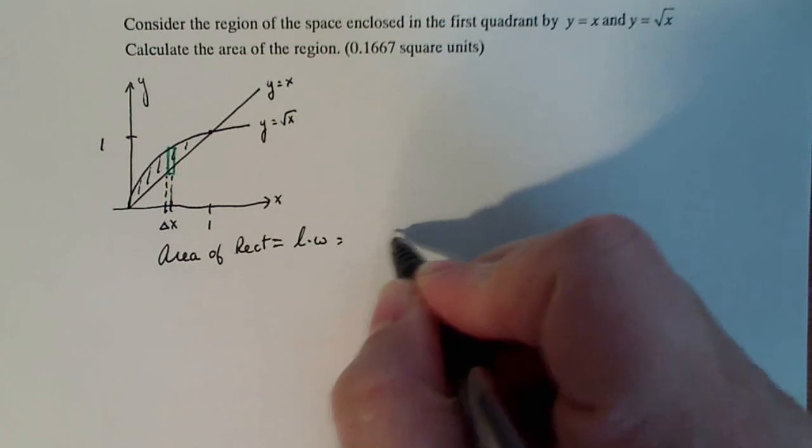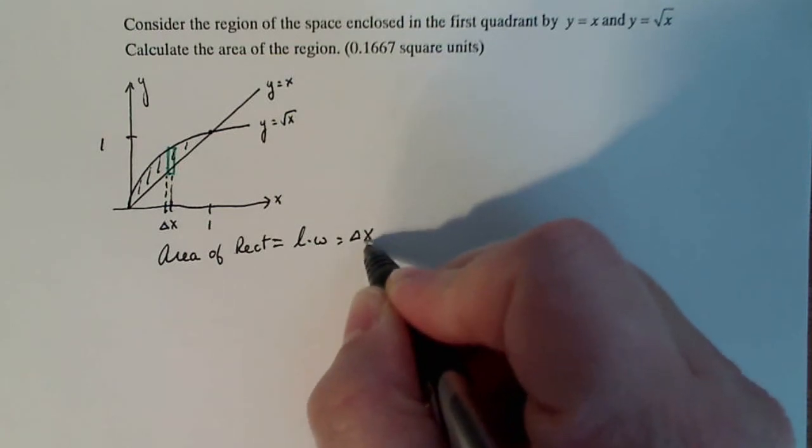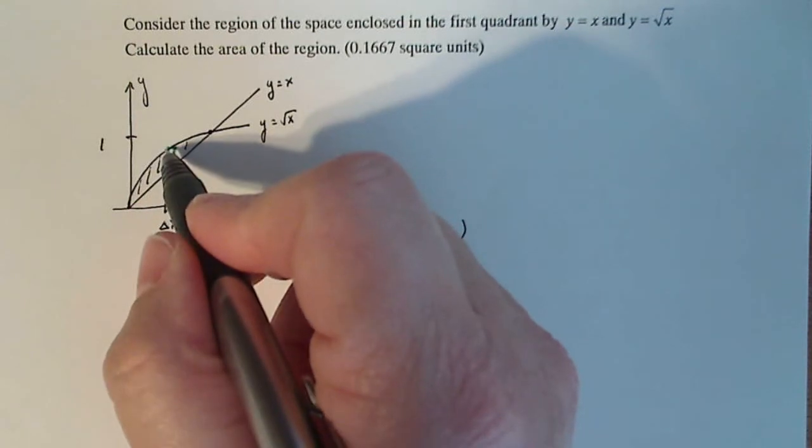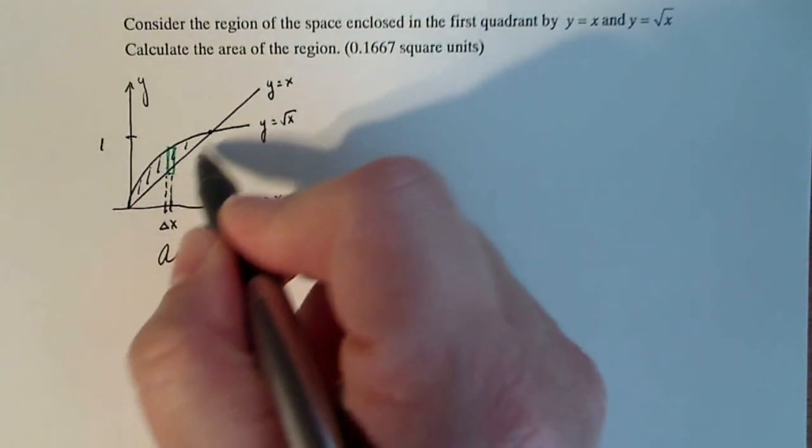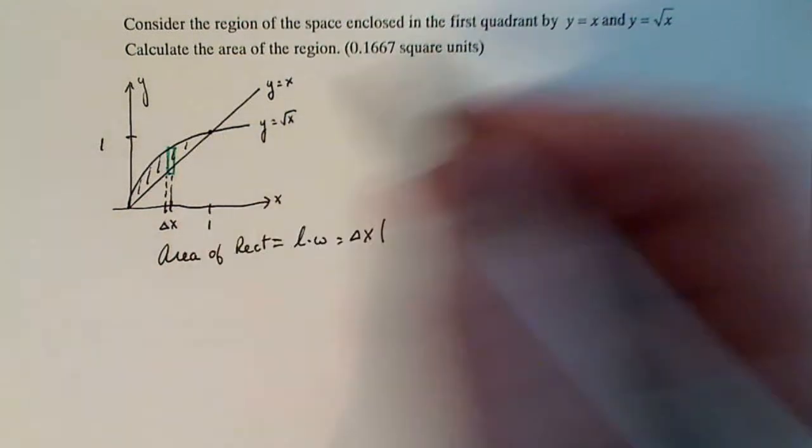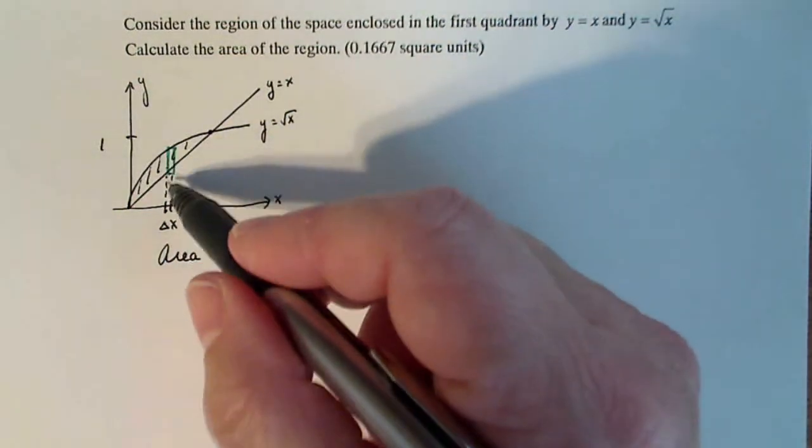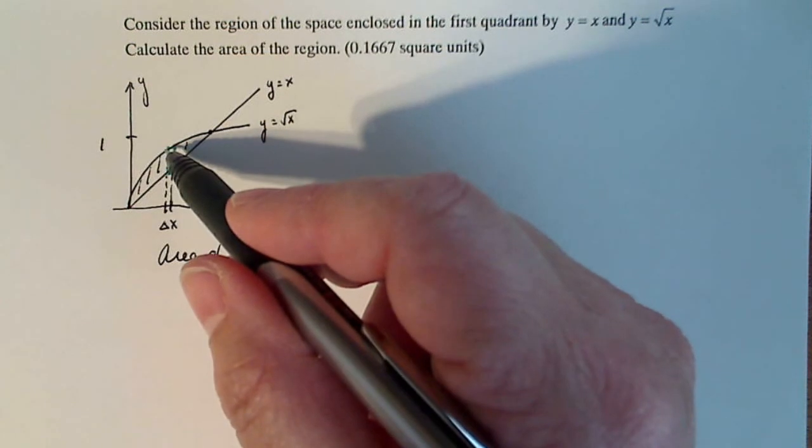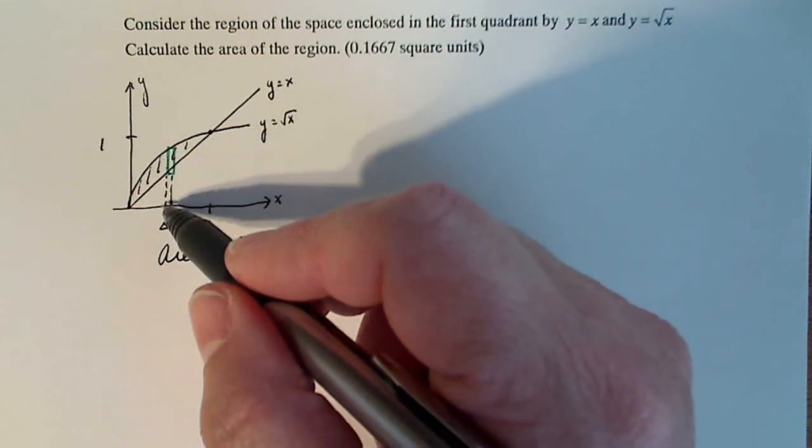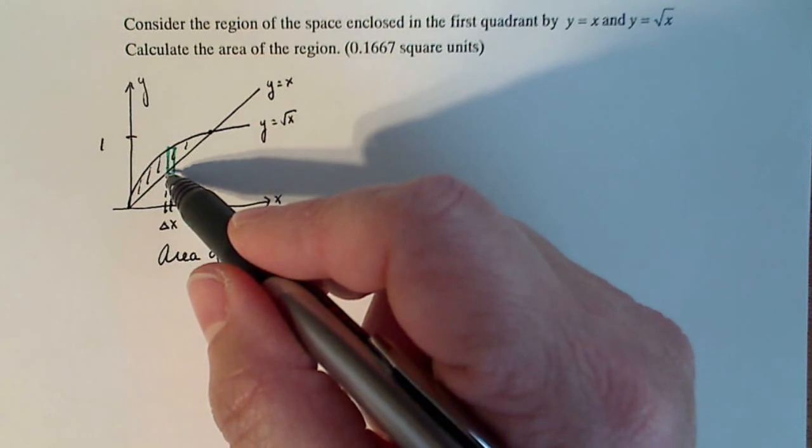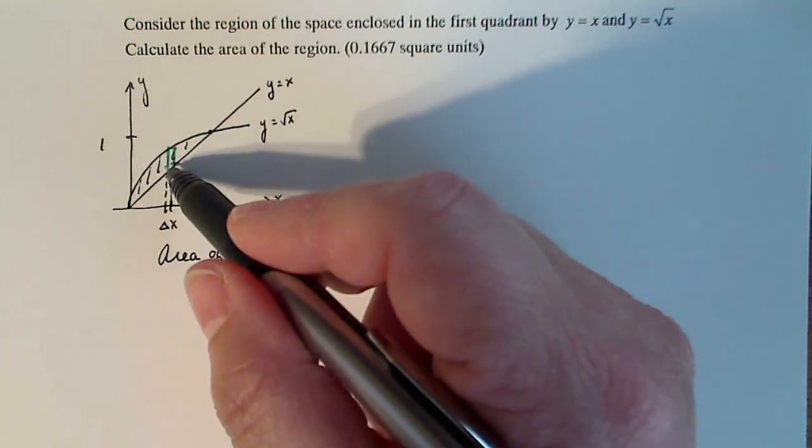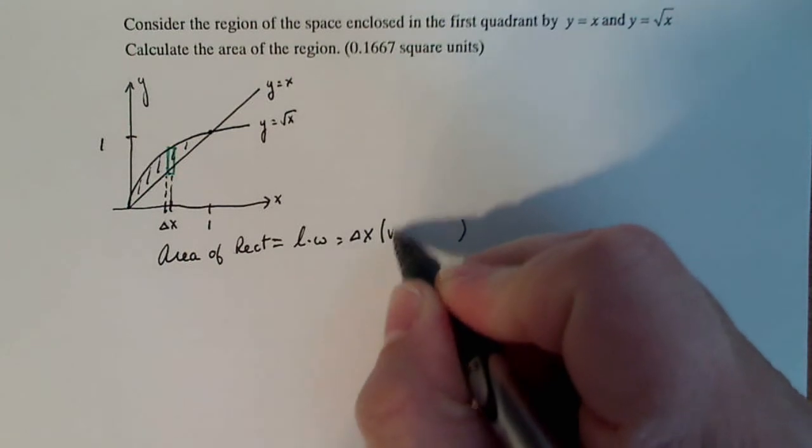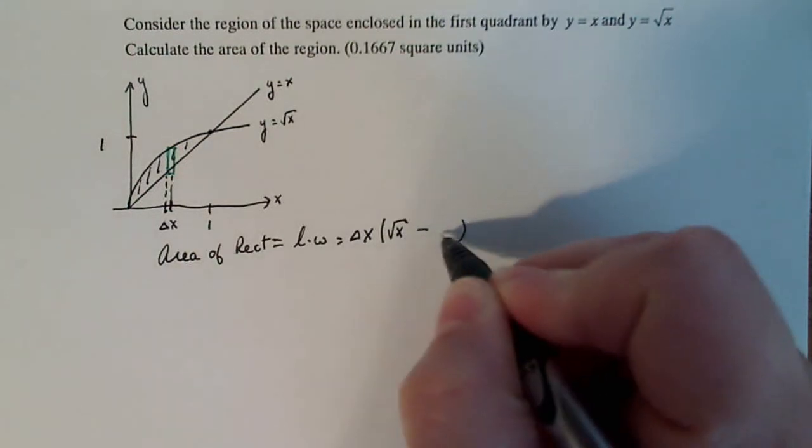So I know my width is delta x. Now I just have to come up with the length of my rectangle, which is this distance here between y equals square root of x and y equals x. So let's see. The distance from the axis to y equals square root of x is square root of x. And the distance from the axis to y equals x is y equals x. And I want the difference between them. So my length is going to be the square root of x minus x.